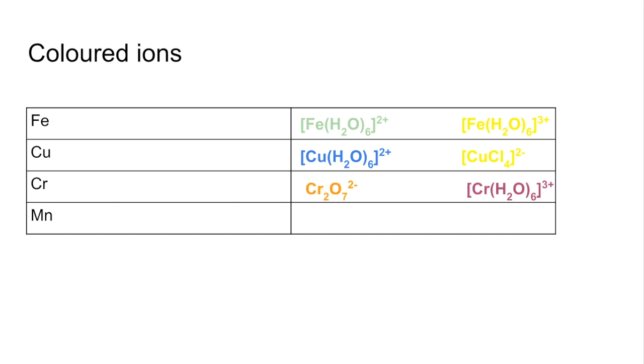Chromium - the dichromate ion is orange, whereas the CrH2O63+ complex ion is violet. Manganese - MnH2O62+ complex is pale pink, very pale pink. The MnO4- ion, which you'll probably be familiar with from potassium manganate 7 titrations, is purple.